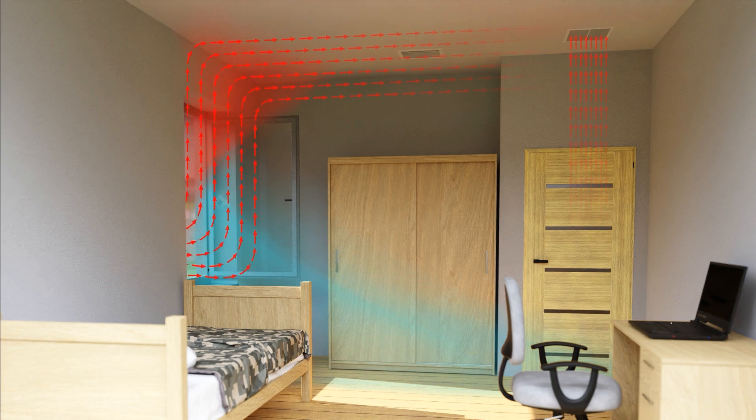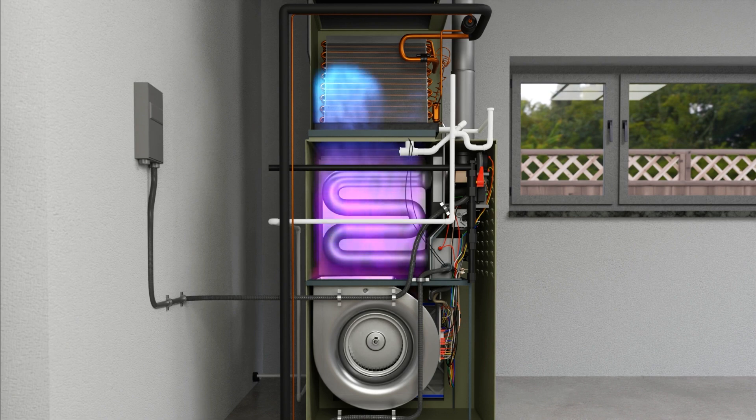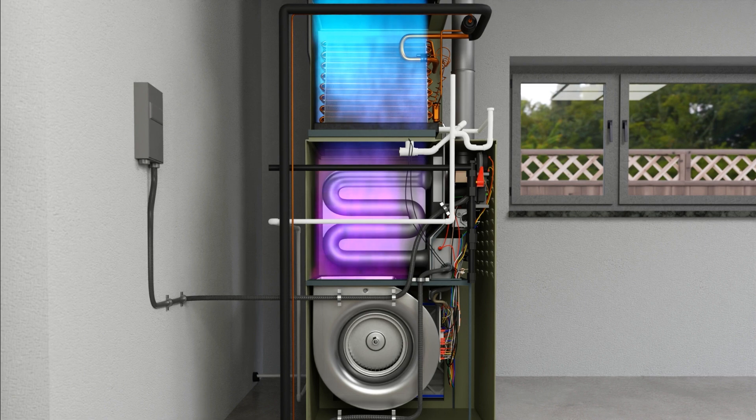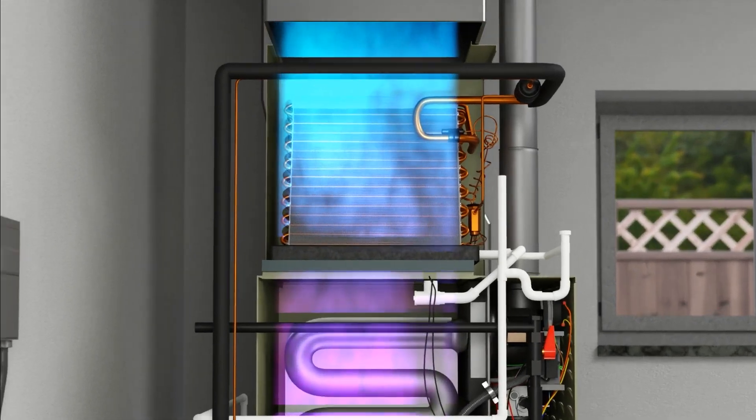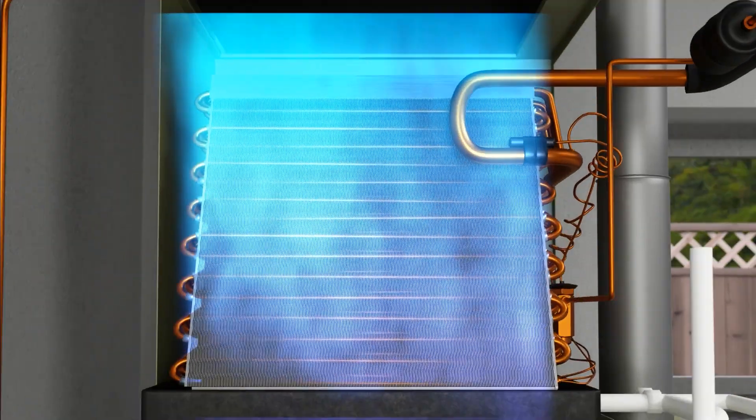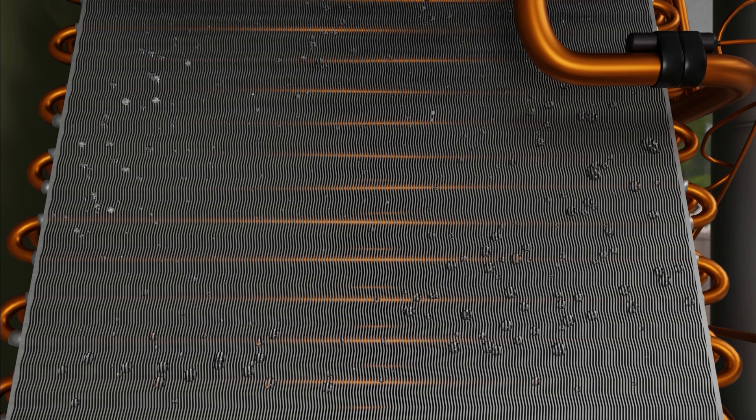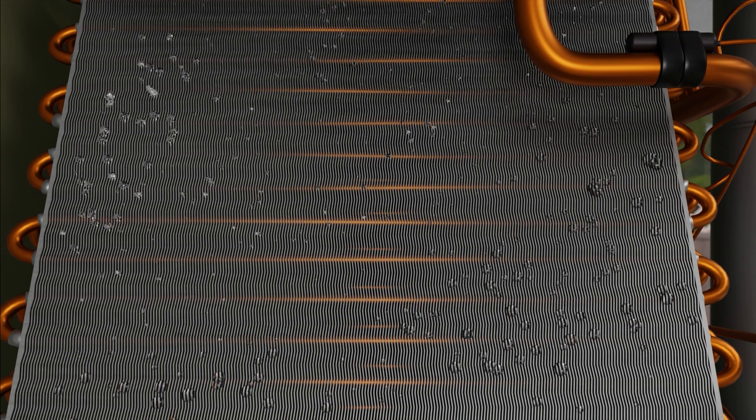You can see the air moving into the return of the HVAC system, which will take it into the unit here. When air passes over the evaporator coil during the cooling process, water condenses on the coil. Water vapor becomes a liquid. This type of transfer is called latent heat transfer because we can't measure the energy utilized with the thermometer, like we mentioned before.